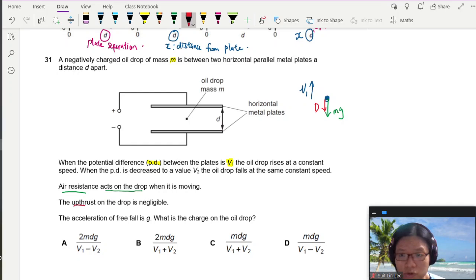Alright? Up thrust is negligible, so there's no buoyant force. Since there's no buoyant force, there's only one force that can balance D and mg so that there's no acceleration. And that force here would be the electric force.